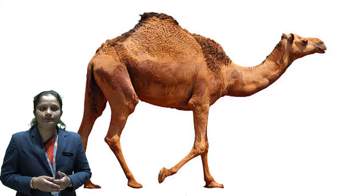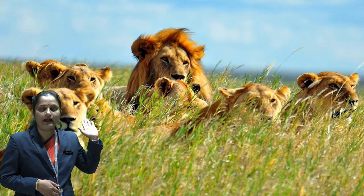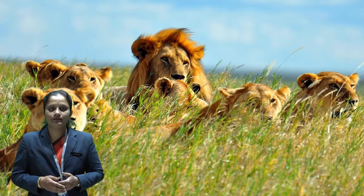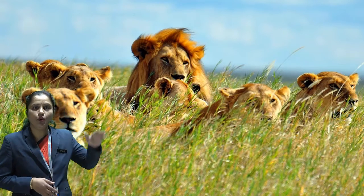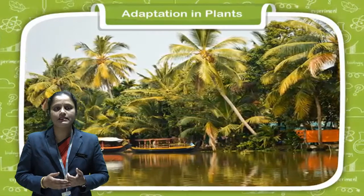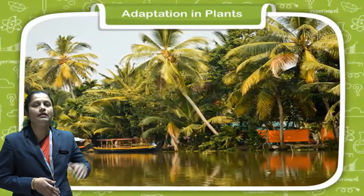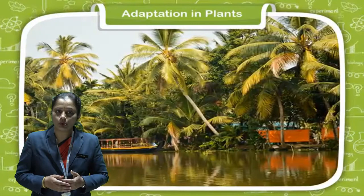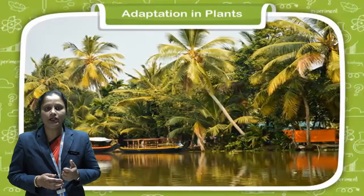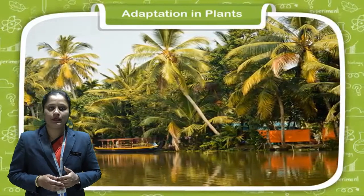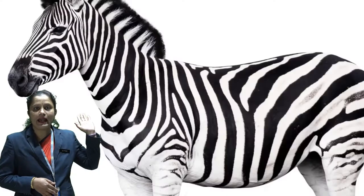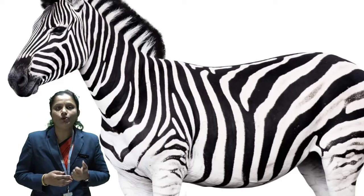Let's move ahead. Next one: grassland habitat. Grassland habitats are places that receive more rain than deserts but less precipitation than forests. So, grasslands get moderate rain. Plenty of grasses grow here. So, grass-eating animals like giraffes and zebras are found here.